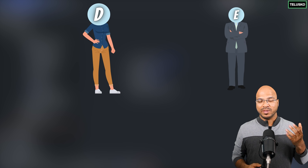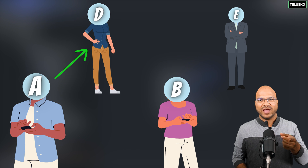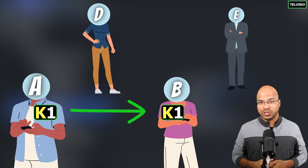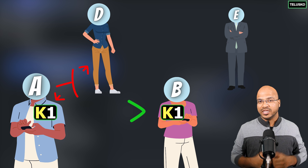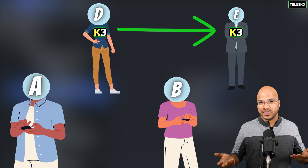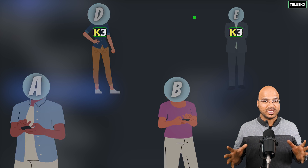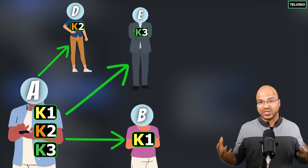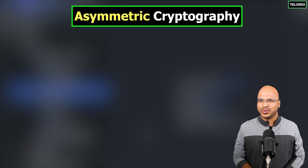Symmetric cryptography is faster and you can have a large key size — the bigger the key size, the more secure it is. The challenge is key sharing, and also managing multiple keys when there are multiple members in the network. If K1 is shared by A and B, A needs a different key K2 with D, and D needs K3 with E. Managing all these keys becomes difficult. The solution for this is asymmetric cryptography.